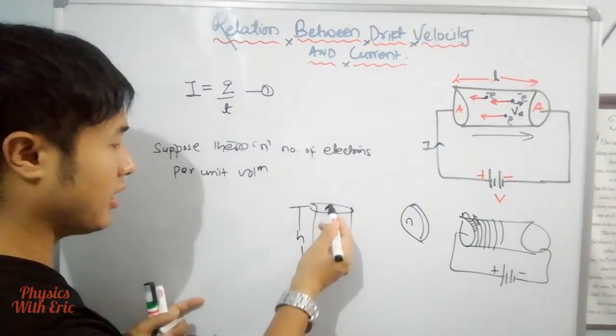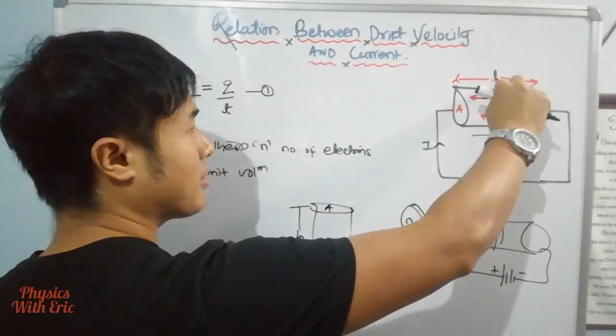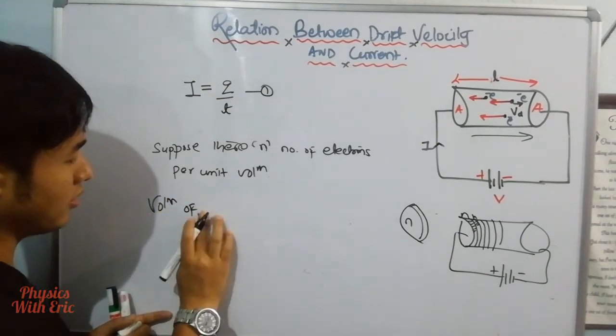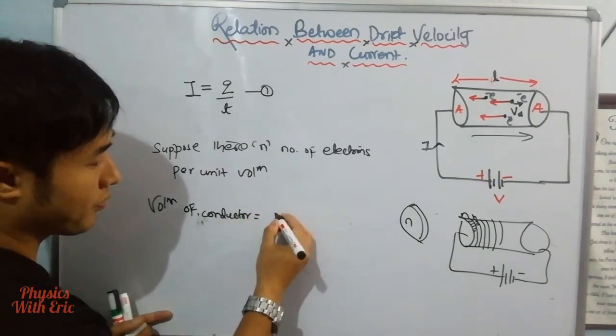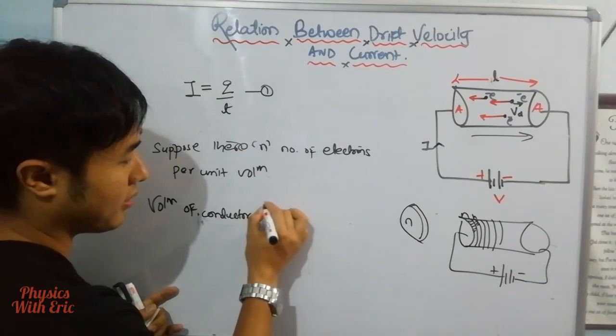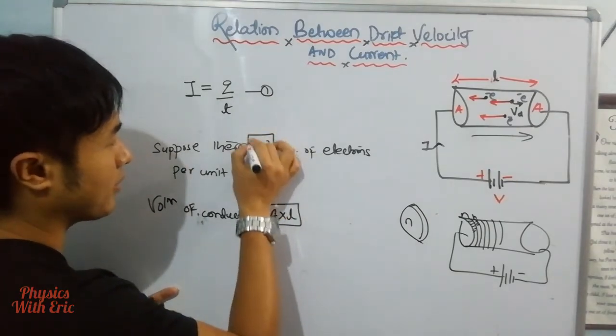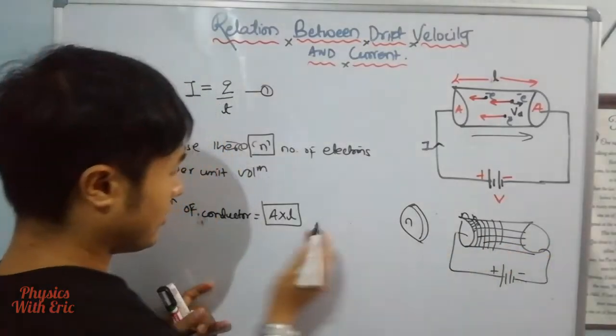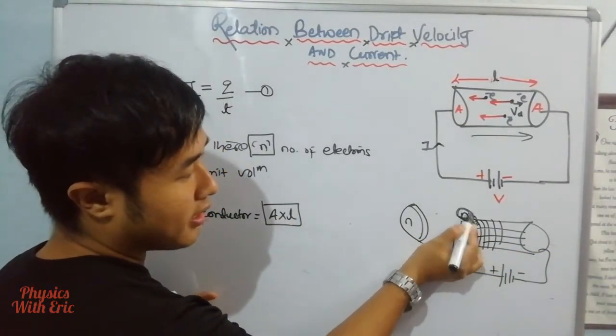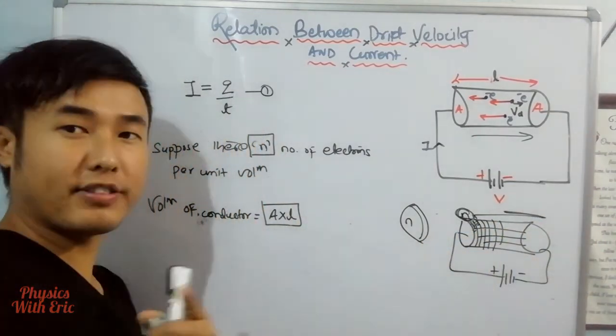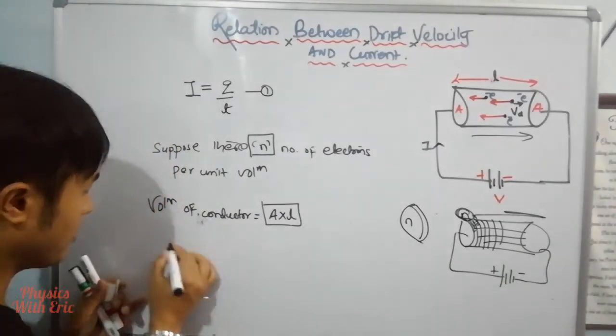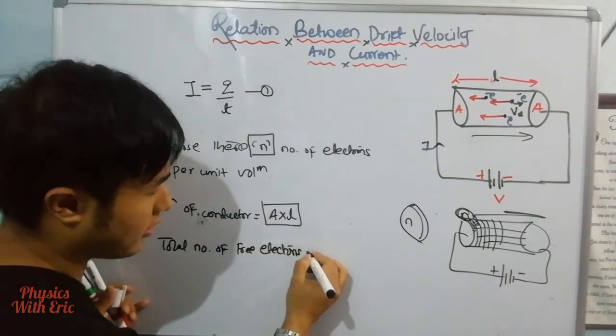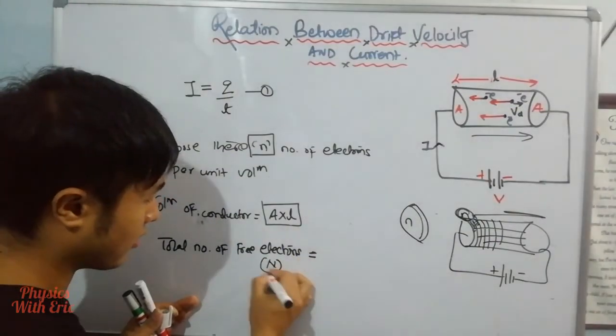The volume of the conductor equals area into length, so volume of conductor V equals A into L. This times n gives us the total number of free electrons in the conductor.